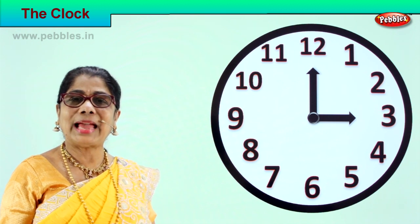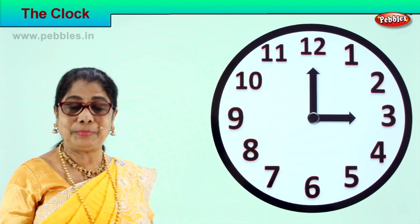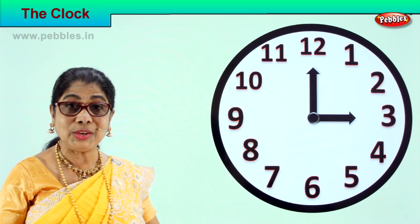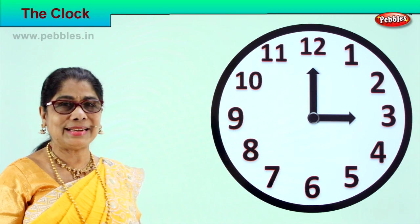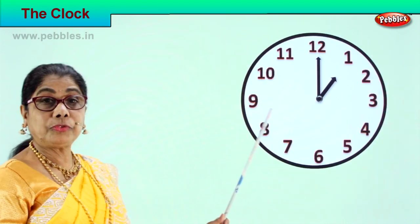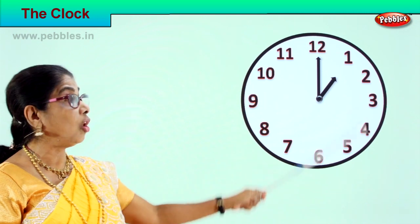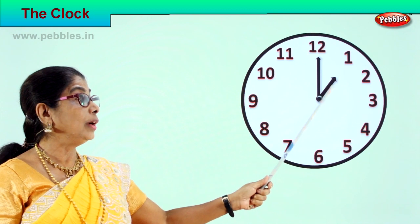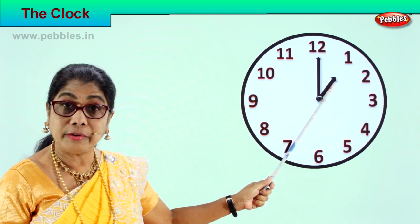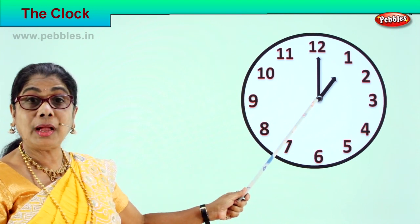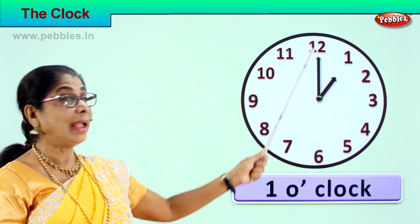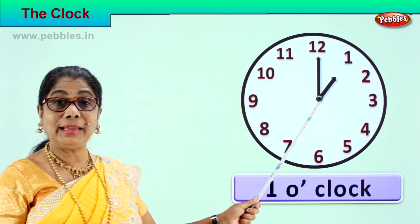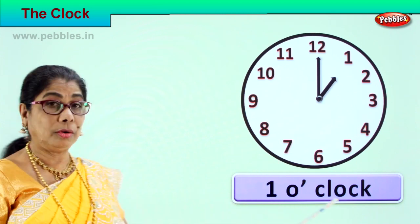Now I'll show you different clocks and we'll read the time. Remember: the clock face has 12 numbers and two hands. Let's do a short exercise reading time. The face of the clock has 12 numbers — one short hand telling you the hour, and the long hand telling you how many minutes. How do you read this? You read it as one o'clock, because the short hand points towards one and the long hand remains at twelve.